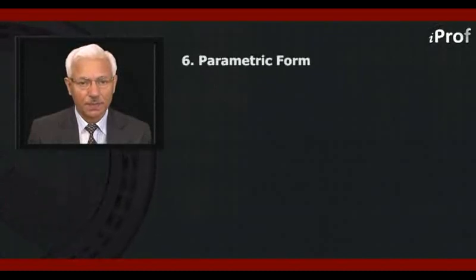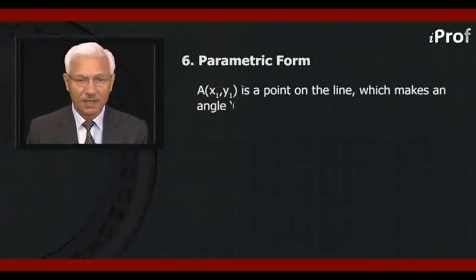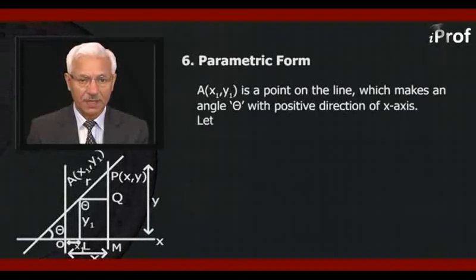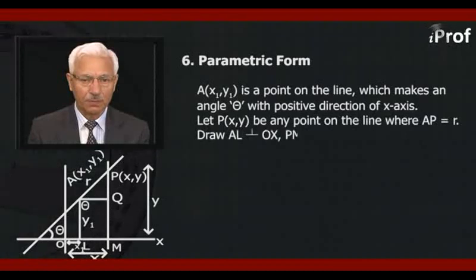Sixth is parametric form. Here, A(x1, y1) is a point on the line which makes an angle theta with the positive direction of the x-axis. Let P(x, y) be any point on the line, where AP is equal to R, that is the distance. Draw AN perpendicular to Ox, PM perpendicular to Ox, and AQ perpendicular to PM.